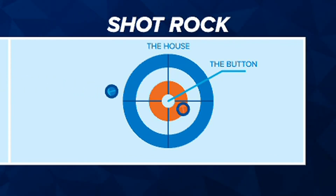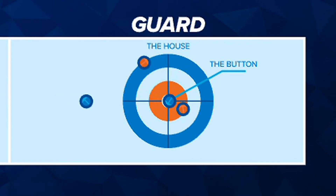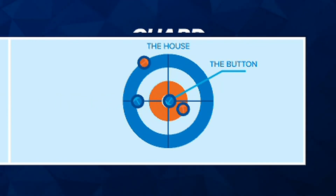Shotrock. The stone that is closest to the button. Guard. A stone that is strategically placed to protect another stone behind it.